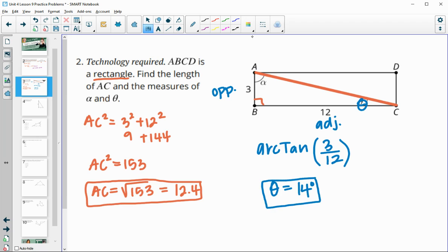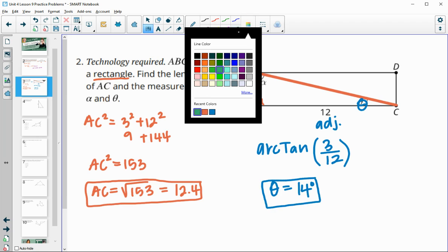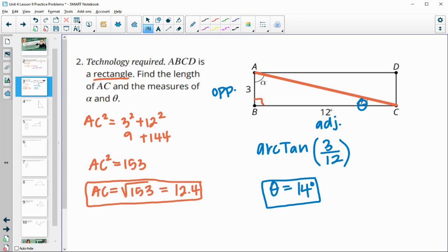Then when you go to find alpha, you can set up an arc tan of 12 over 3, flip these around. You can also remember that alpha would be equal to 90 minus theta since these two are going to total 90 and theta is 14. So 90 minus 14 is 76 degrees for alpha.